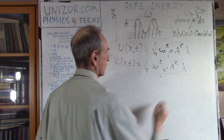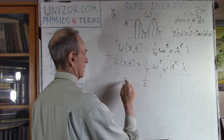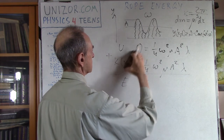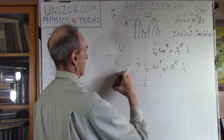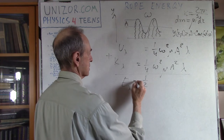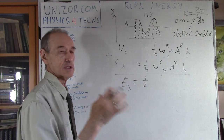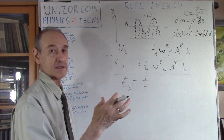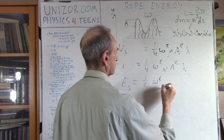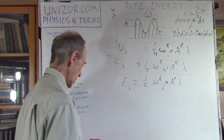Summing potential and kinetic energy, the total energy concentrated in one wavelength of the rope is E_λ = (1/4 + 1/4)·ω²·μ·A²·λ = (1/2)·ω²·μ·A²·λ. This does not depend on time or position x.